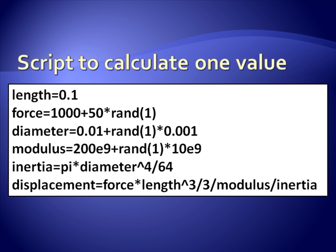So this is a script to do one sampling. That is, sample each of the three random parameters once and calculate a displacement based on those. So the key to this, we set the length. I said that was fixed to be 10 centimeters.